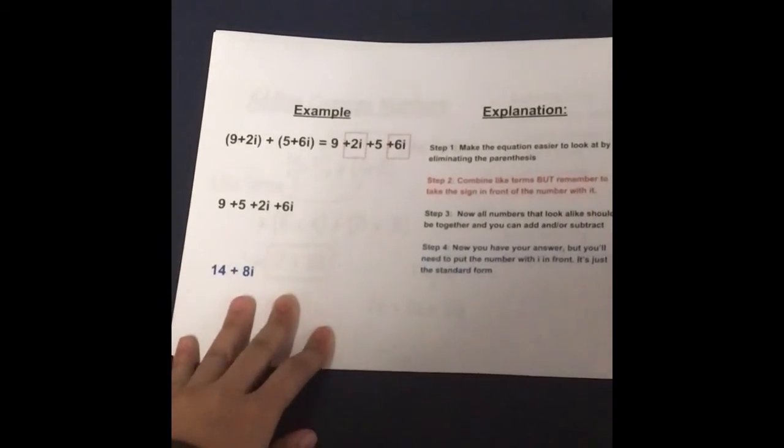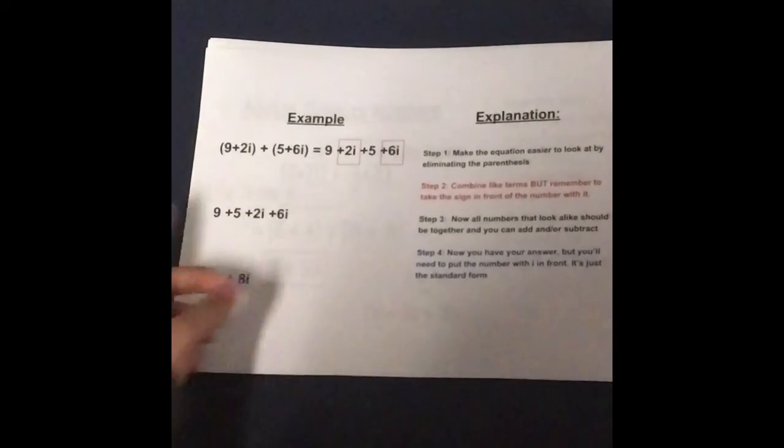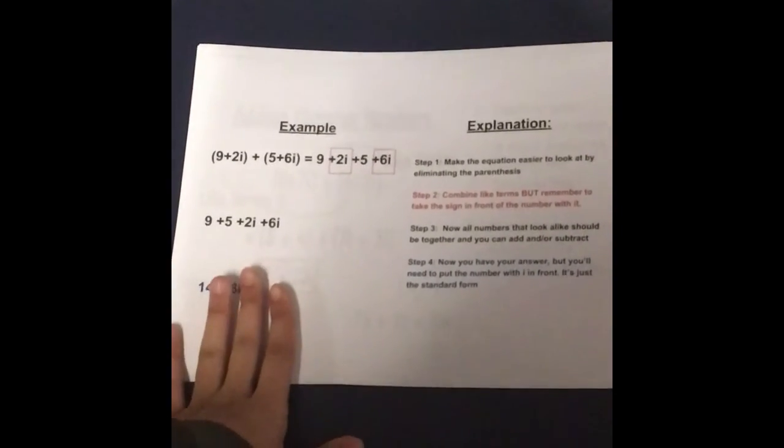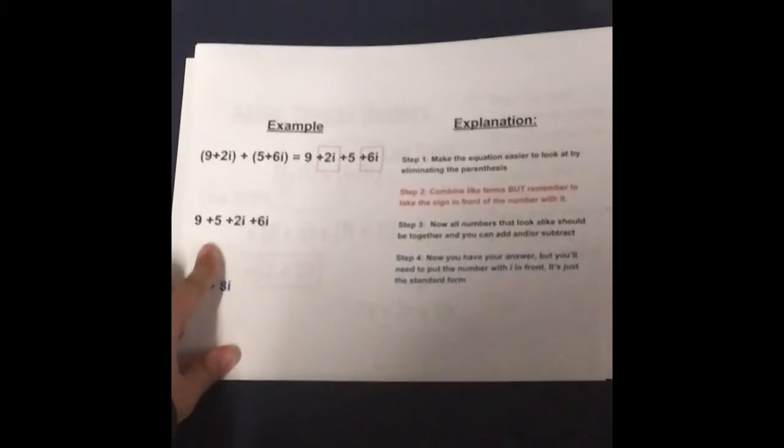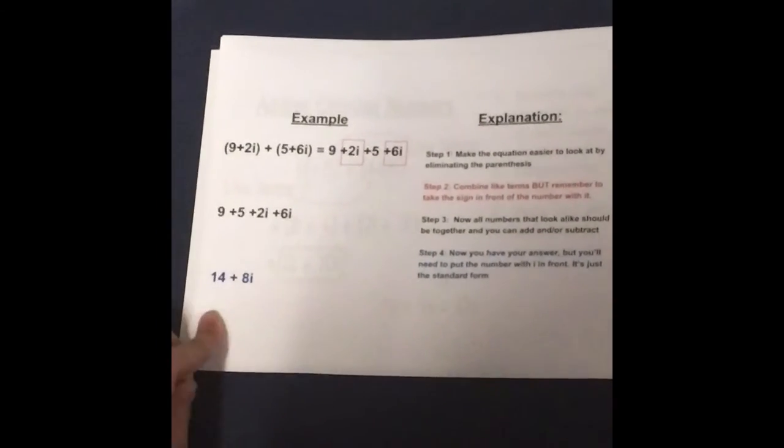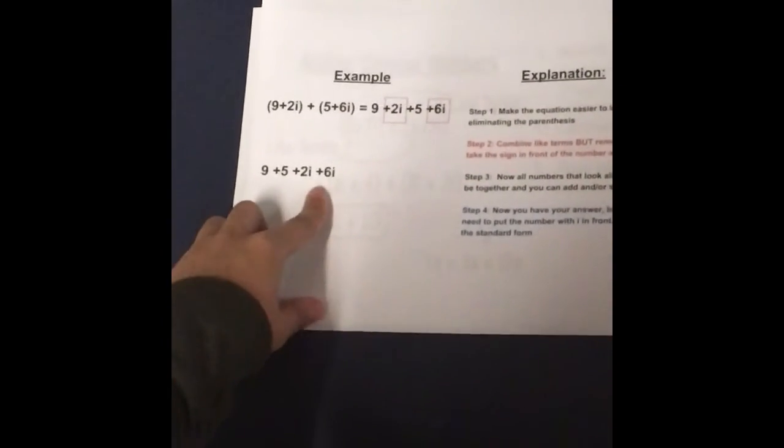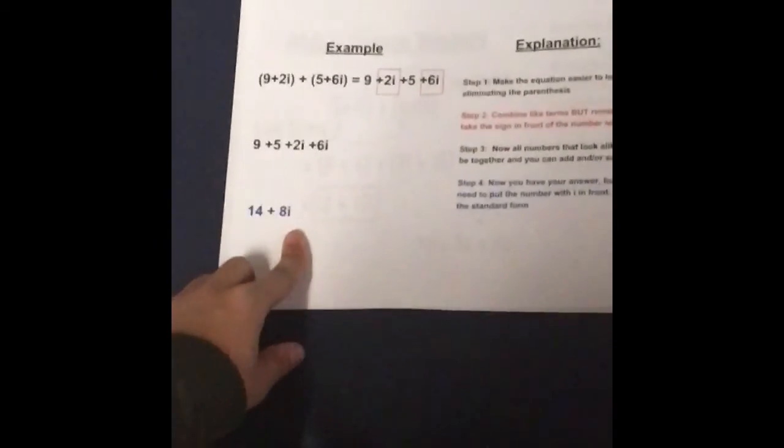Example number three. You sum up your equation like you did the others. Your like terms are 9 plus 5, and you get 14. 2i plus 6i is 8i.